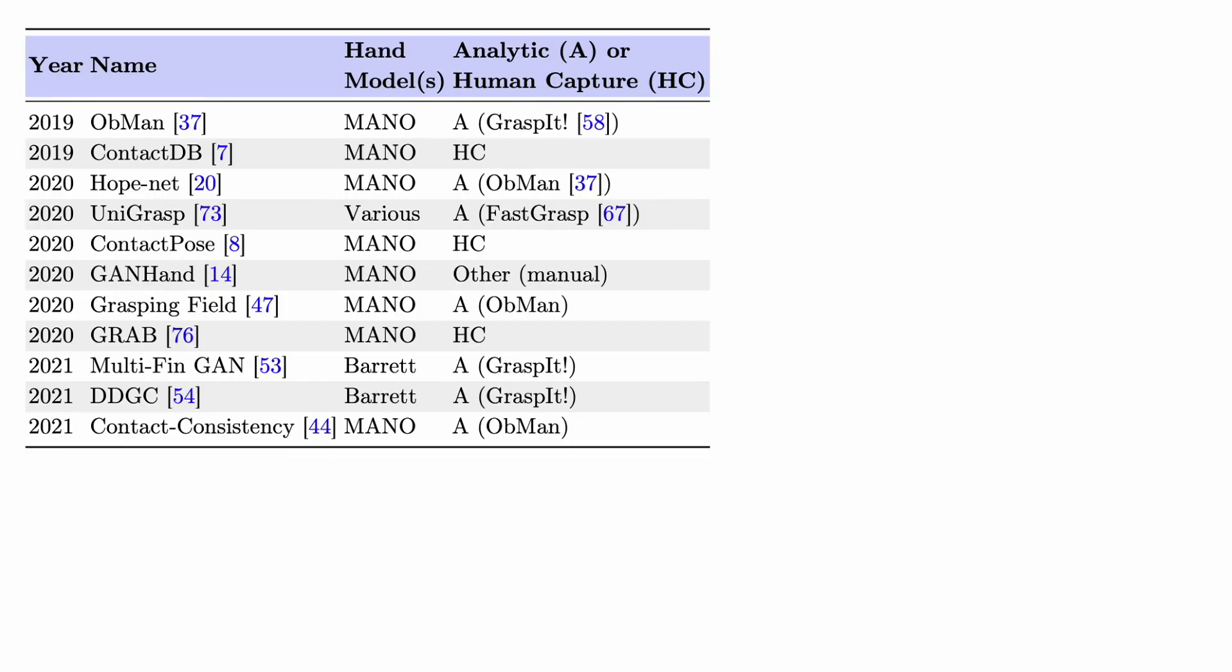Recent works in vision-based grasp prediction for multi-finger hands learn to predict grasps from datasets based on human capture or analytic synthesis. Capturing real human hands provides gold standard human grasps, but is expensive and does not address the need for robotic grasping datasets.